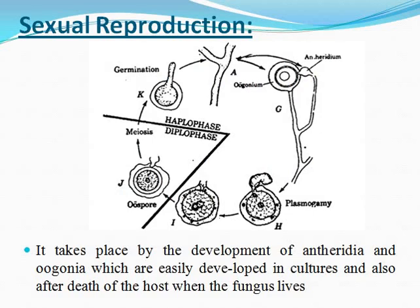If we look at sexual reproduction, it is of the oogamous type. There is an antheridium — the male part — and an oogonium — the female part. The antheridium and oogonium can originate from the same mycelium (homothallic) or different mycelia, which is called the heterothallic condition.